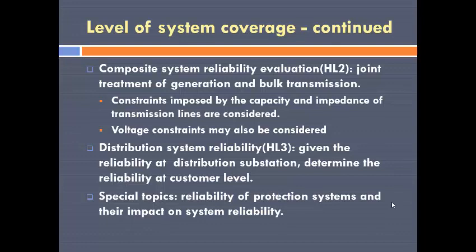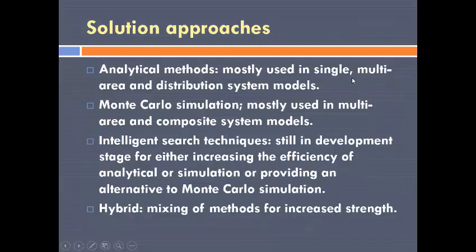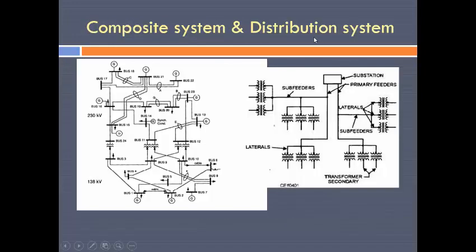The third level is the distribution system reliability. Distribution systems are connected to a substation, and the substation is fed from one of the buses of the composite system. It would be very difficult, if not impossible, to consider the distribution, transmission, and generation all together. So what we do is find the reliability indices of the substation, and knowing those indices we can then compute the reliability indices of the distribution system.